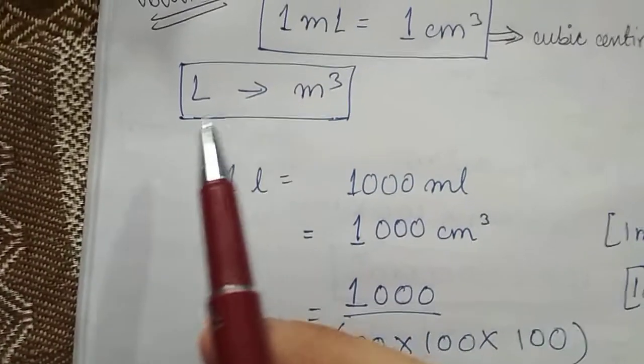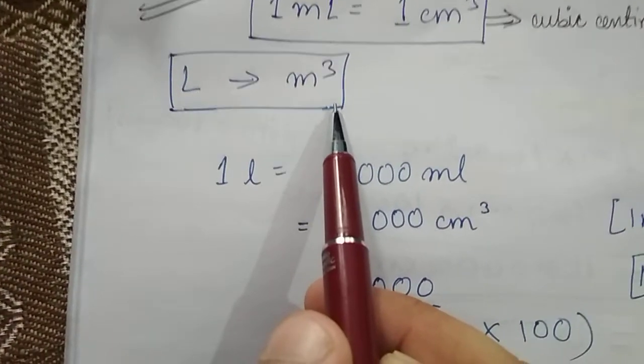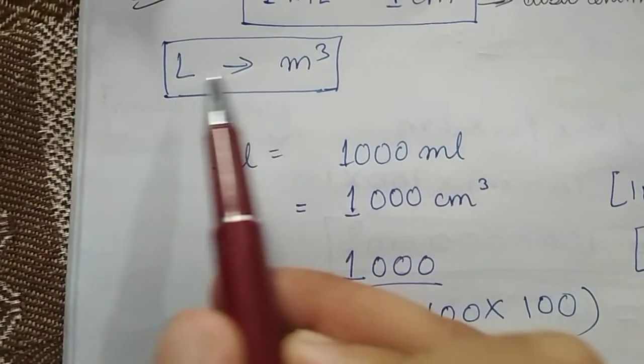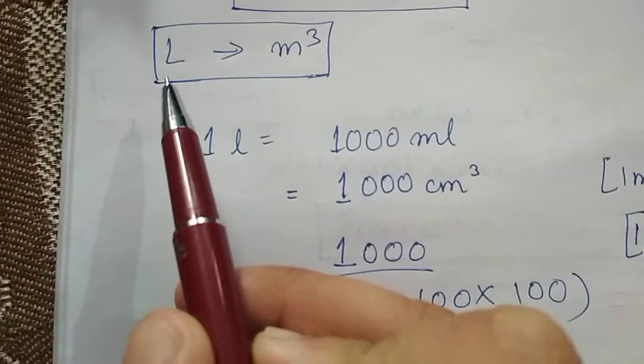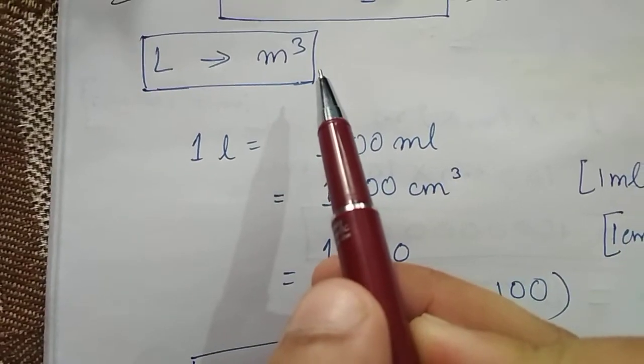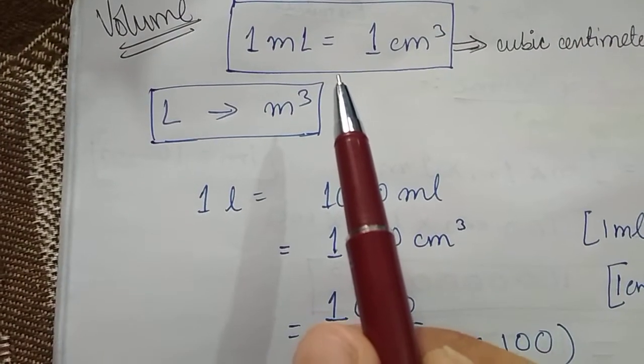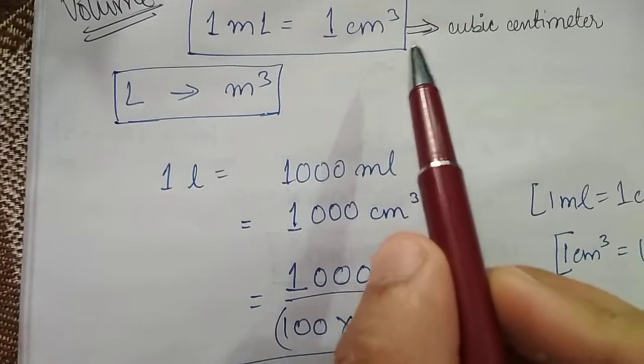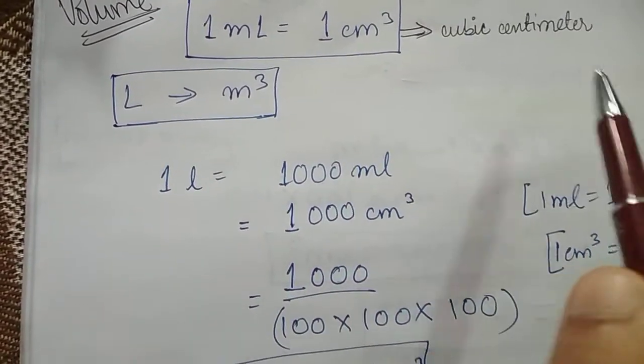We have to convert from liter to meter cube. Let's discuss how we can convert from liter to meter cube and what is the relation between one liter and meter cube. First, we must know the basic thing is that 1 mL is equal to 1 centimeter cube, or we have to pronounce it as cubic centimeter.